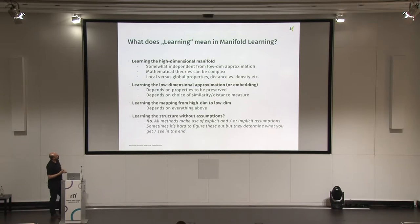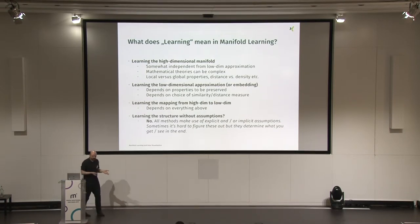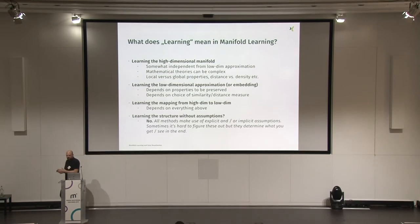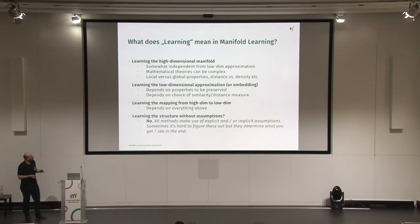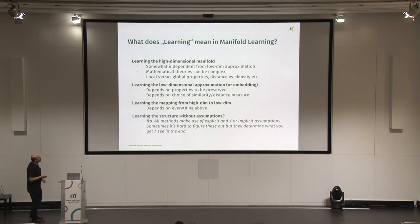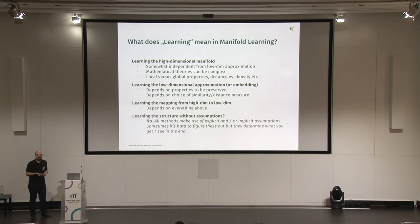We want to learn something about this manifold. What I've written down here is somewhat independent from the approximation problem, because in the end, in order to make it useful, we need a low-dimensional approximation. But this first thing is independent, so we can look at it from a very abstract perspective — the perspective of manifolds. The theories we use here in the manifold learning setting can be very complex.